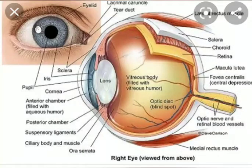Structure of the eyes. Eyelids: it is like a curtain. It covers the eyes when we sleep and when we blink.